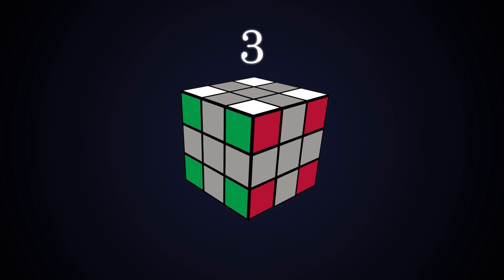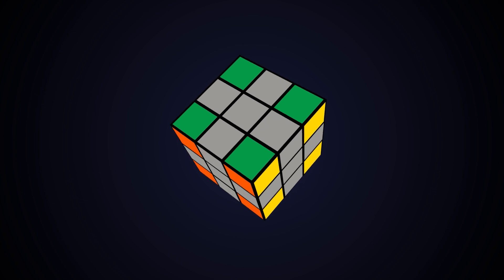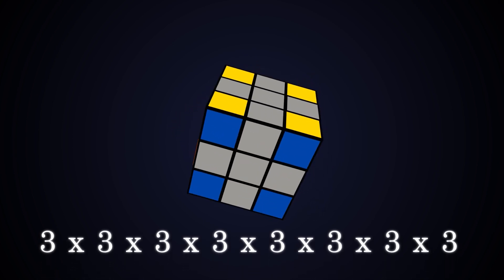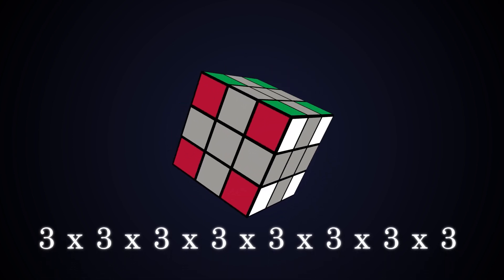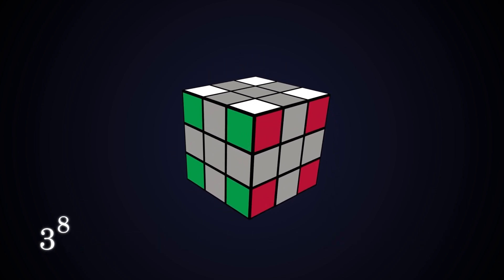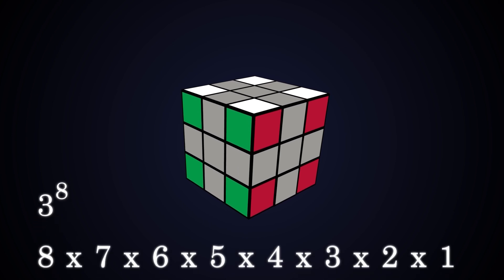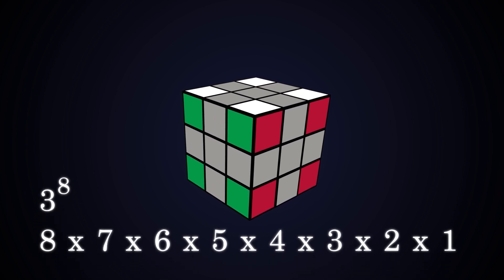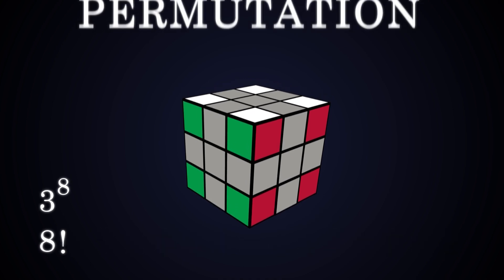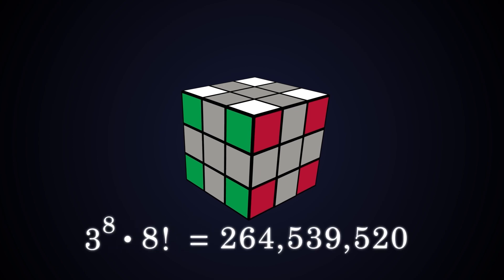This idea of how to twist or flip the piece is called orientation. Since there are eight corners we can multiply three by itself eight times to cover all possible corner orientations. And the amount of ways you can place the pieces in the first place or swap them around would be the same as what we had for eight edges—and well, eight of anything. This idea is called permutation. Multiply these numbers and we get this, which is close to the population of a big country like Indonesia.